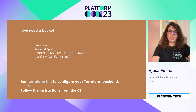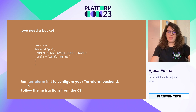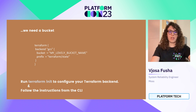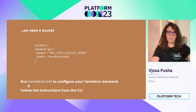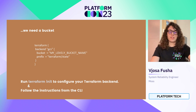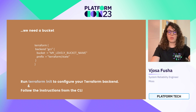First, we need a bucket. Make sure that you have a bucket created. Then add the backend Terraform configuration and make sure to specify your bucket name. After that, run Terraform init. Terraform detects that you already have a state file locally and prompts you to copy it to the new cloud storage bucket.